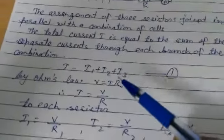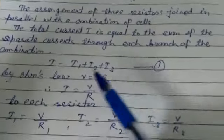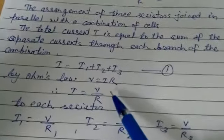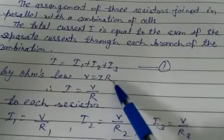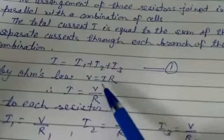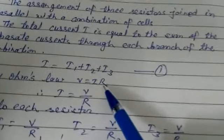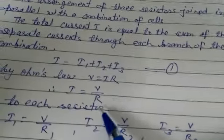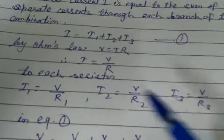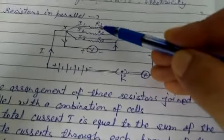It means I equal to I1 plus I2 plus I3. We have one formula by Ohm's law, that is V equal to IR. V is a voltage or potential difference, I is a current, R is a resistor. We can rearrange this formula. When you have a cross multiplication, I equal to V upon R.